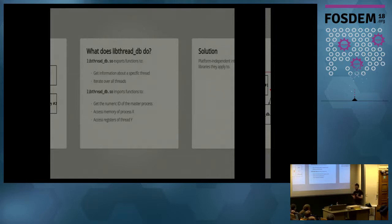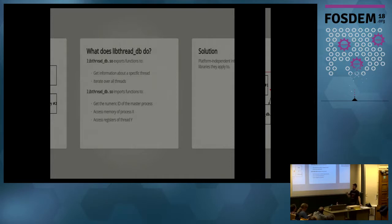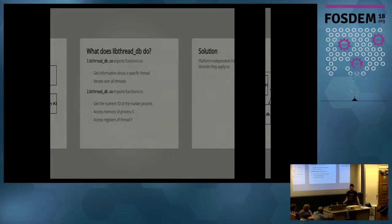Unlike a lot of other libraries, LibThreadDB is kind of double-ended. It exports functions to the tool, but it also imports functions back from the tool. So the debugger might ask for the priority of a particular thread, and then the thread debugging library comes back to the tool and says, can I have the contents of this block of memory, or can I have this register from this thread? The thread debugging library is essentially handing over the steering wheel to the thread debug library just for a little while, and then it comes back with whatever the debugger asked for.